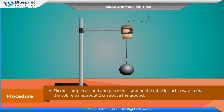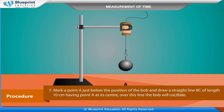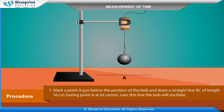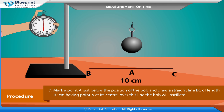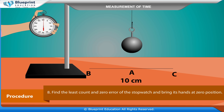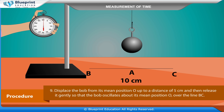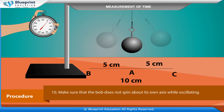Fix the clamp in a stand and place the stand on the table in such a way so that the bob remains about 2 cm above the ground. Mark a point A just below the position of the bob and draw a straight line BC of length 10 cm having point A at its center — over this line the bob will oscillate. Find the least count and zero error of the stopwatch and bring its hands to zero position. Displace the bob from its mean position O up to a distance of 5 cm and then release it gently so that the bob oscillates about its mean position O over the line BC. Make sure that the bob does not spin about its own axis while oscillating.